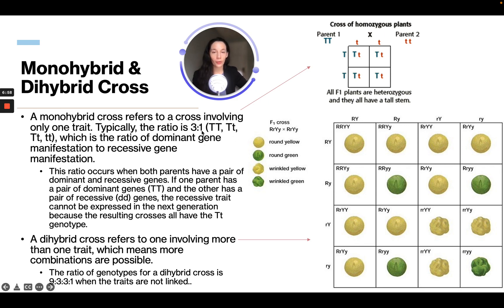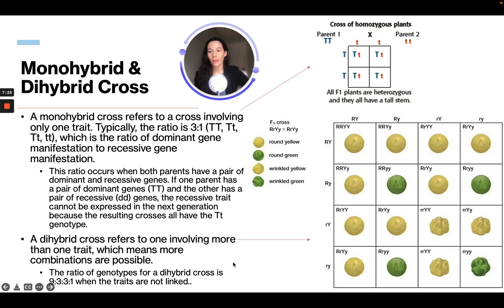To clarify: the three to one ratio applies when we have two parents that each carry a dominant and a recessive gene — we'll see three tall plants and one short in the F2 generation. However, if the parents have a dominant genotype crossed with a recessive genotype, you will only see tall plants in the F1 cross.